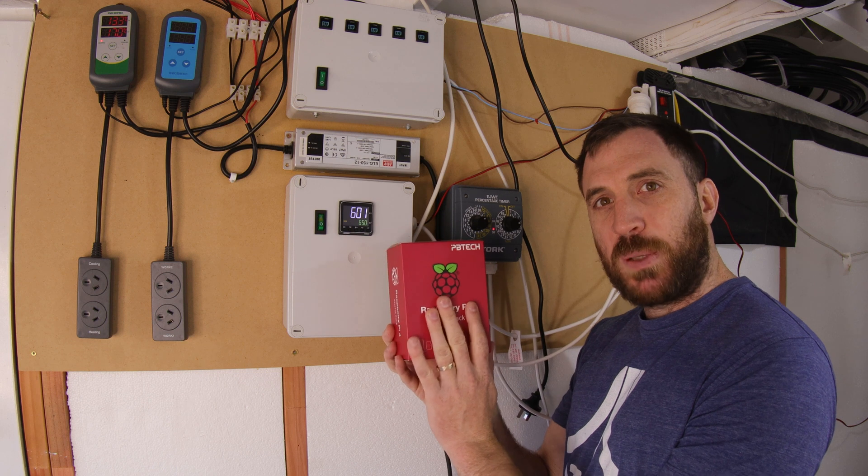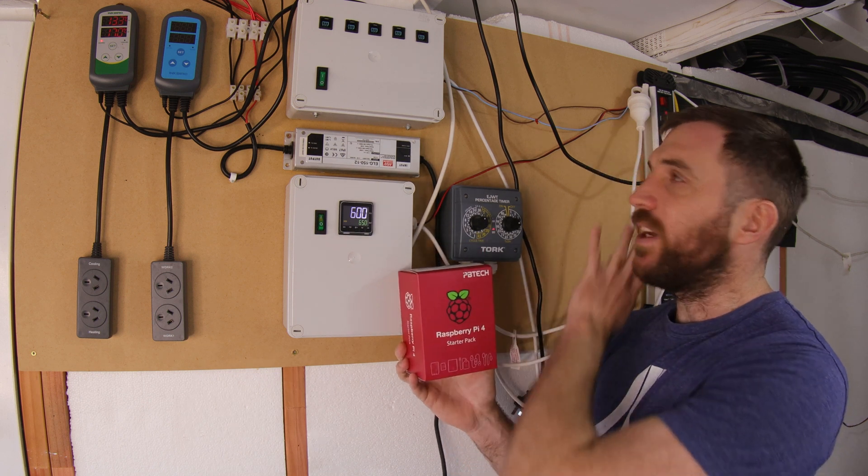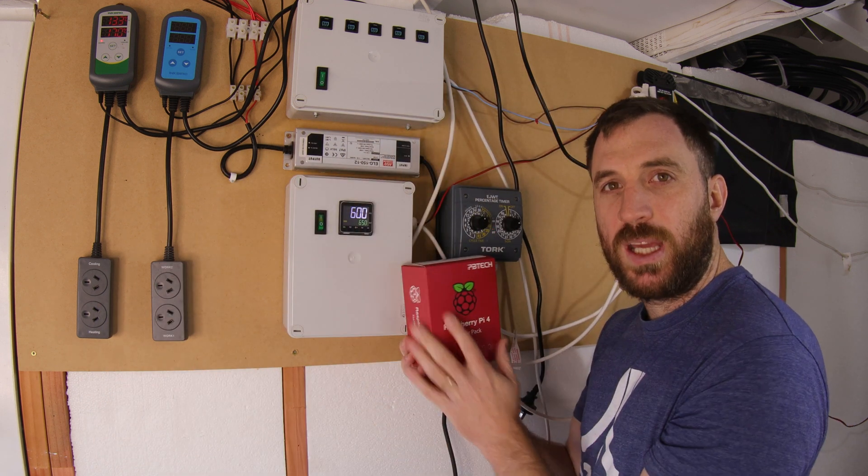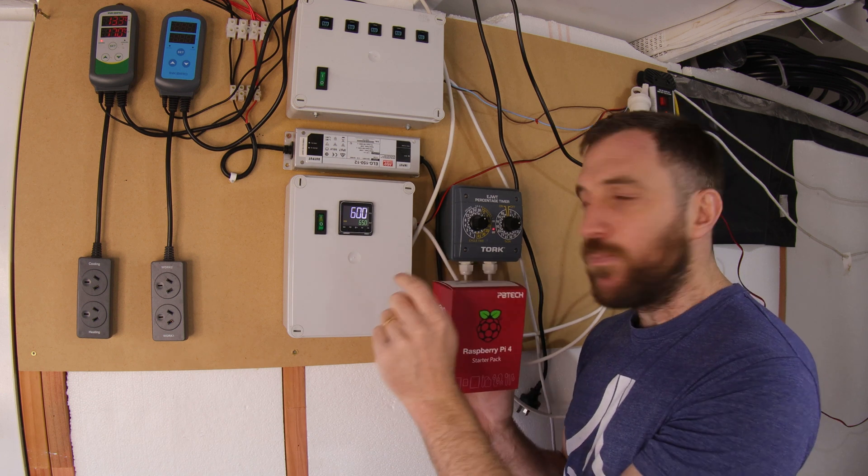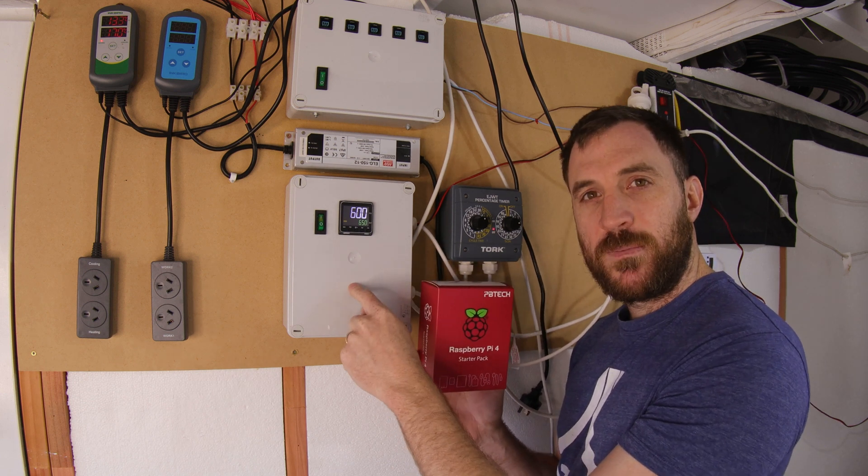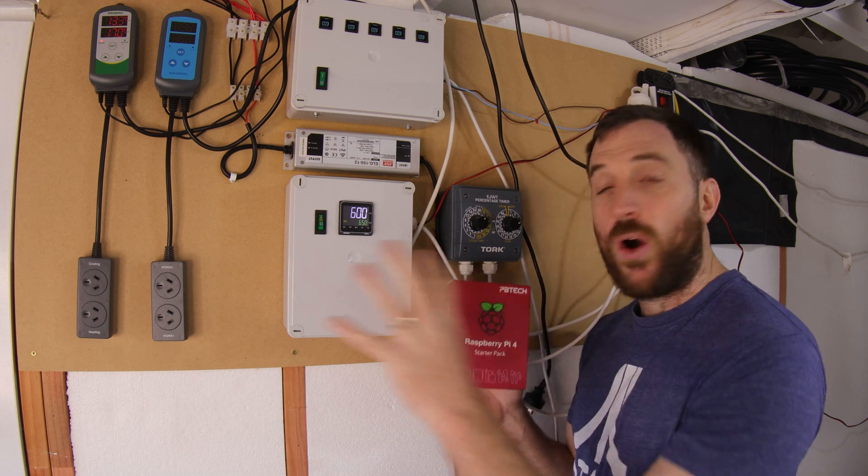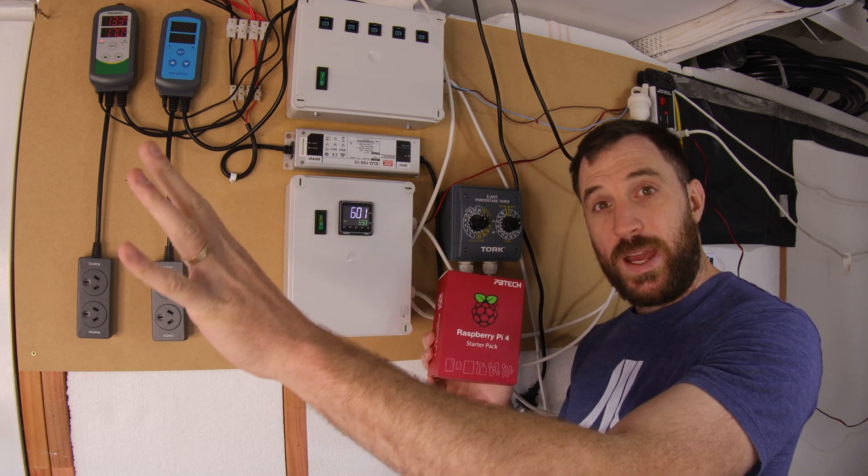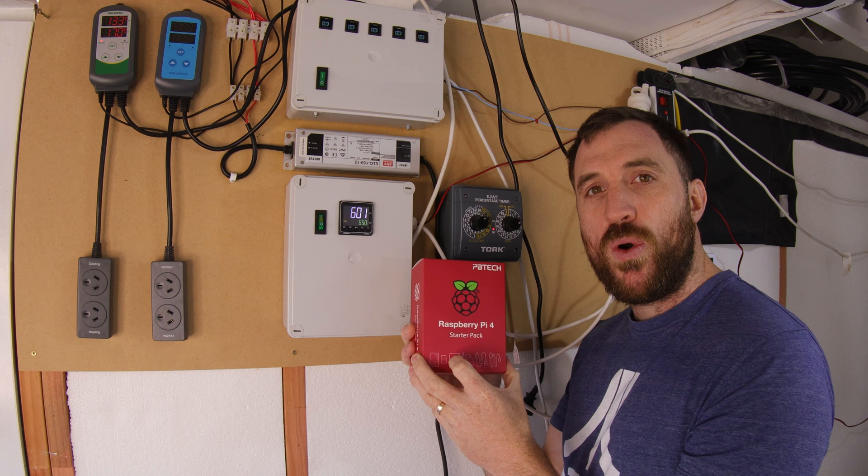Our goal is to have this Raspberry Pi here do the jobs of everything on this wall up here. So we should be able to condense it down to one box about this size. This will then be controlled either out here or in the house by me through home automation.